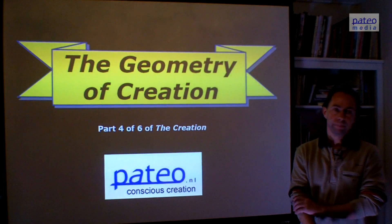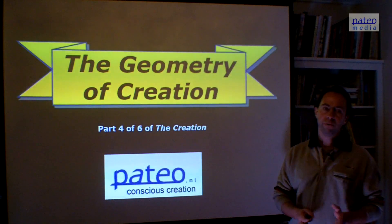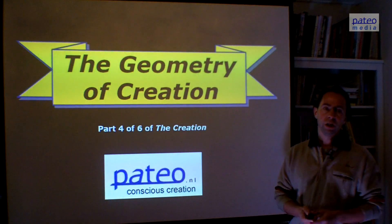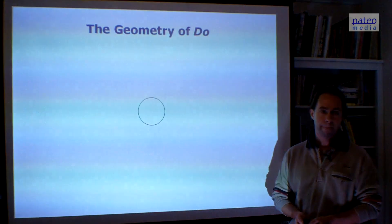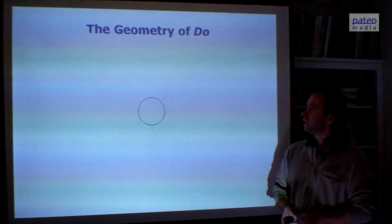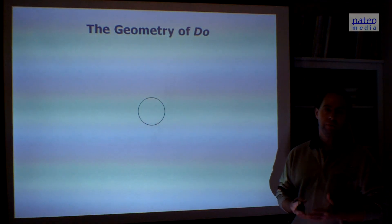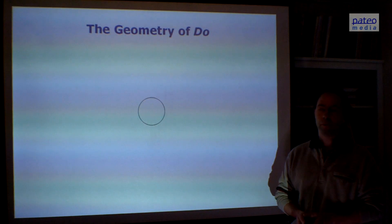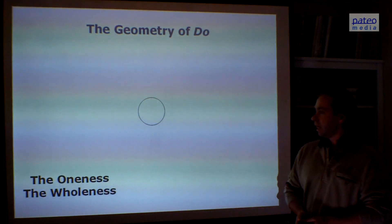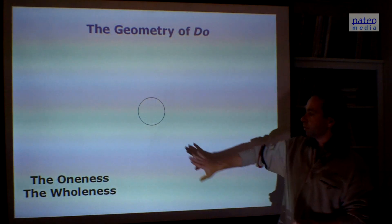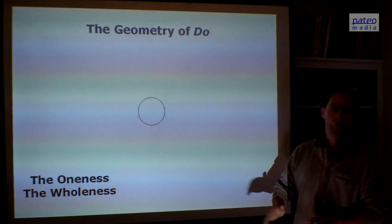Now let us look at the geometry. It is the same as I presented before, but now with geometrical shapes. This is the geometry of Doe — it is just a simple circle. And this circle represents the oneness, the wholeness.